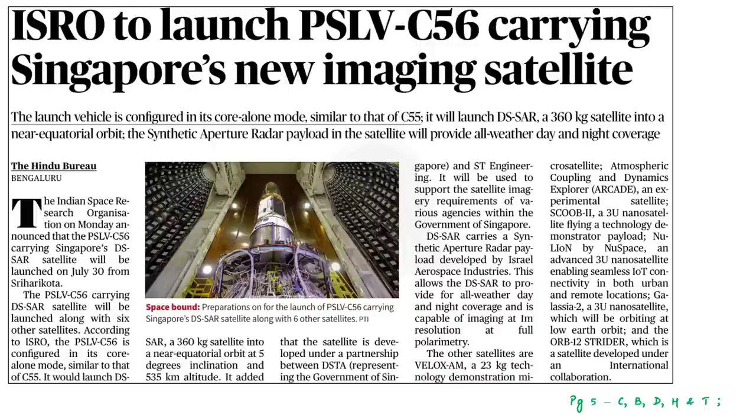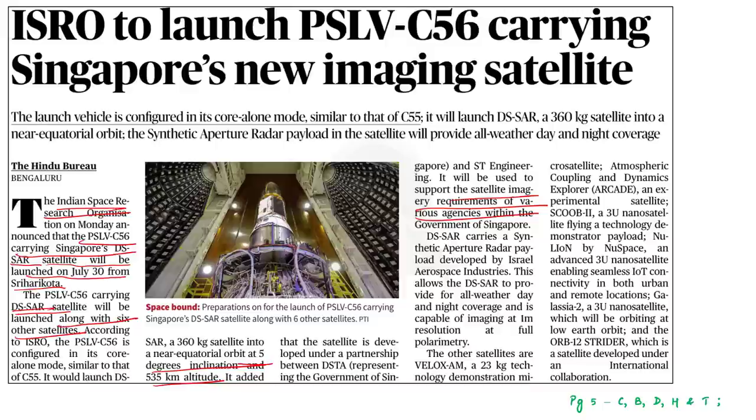Now, with the learned points in mind, now we will move on to the next article discussion. Look at this news article. Yesterday, the Indian Space Research Organization announced that the PSLV C-56 carrying Singapore's DSSAR satellite will be launched on July 30 from Shri Harikota. The DSSAR satellite will be launched along with six other satellites. The DSSAR would be launched into a near equatorial orbit at 5 degrees inclination and 535 kilometer altitude. The satellite will be used to support the satellite imagery requirements of various agencies within the government of Singapore. This is the crux of the news article given here. In this context, let us quickly go through the features of PSLV. But before that, we will also understand about this DSSAR satellite.